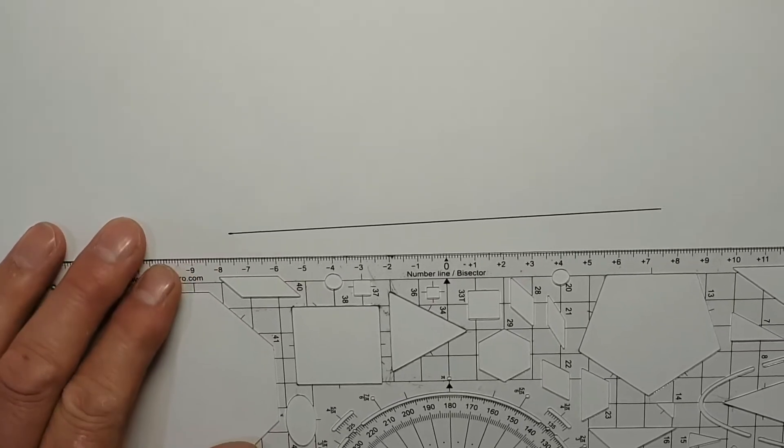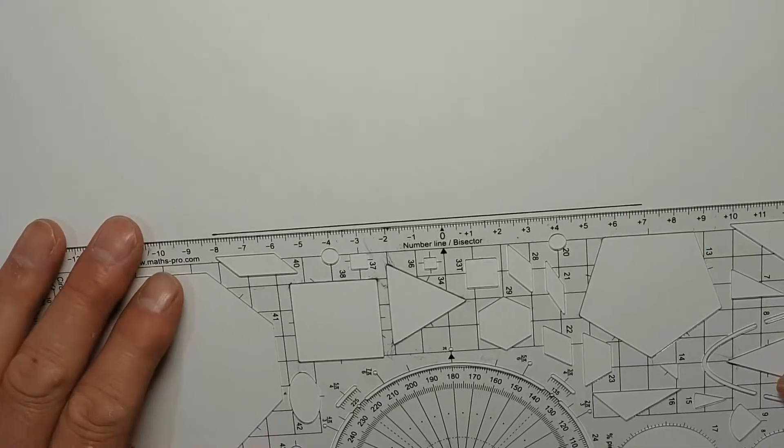What I can do is aim zero on the number line roughly at the center and then look at each end.